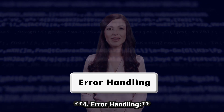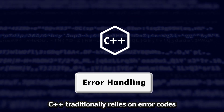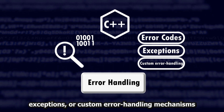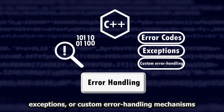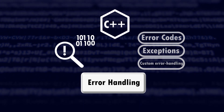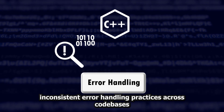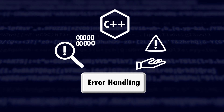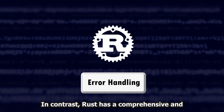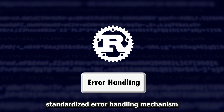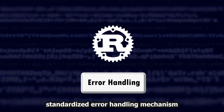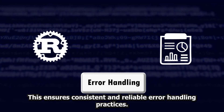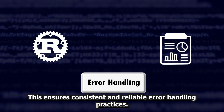4. Error Handling. C++ traditionally relies on error codes, exceptions, or custom error handling mechanisms. This can lead to inconsistent error handling practices across code bases. In contrast, Rust has a comprehensive and standardized error handling mechanism using its Result type. This ensures consistent and reliable error handling practices.